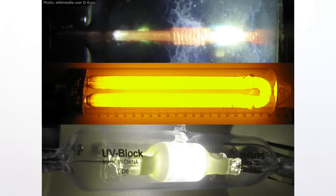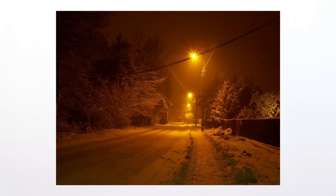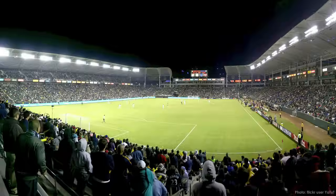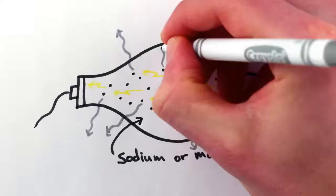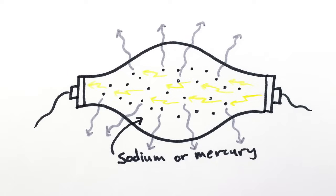Sodium, mercury, and metal halide vapor lamps, which are commonly used for lighting streets, warehouses, gymnasiums, and other large areas, are also tubes that run electrical current through a gas. The gas itself emits mainly visible light, so these bulbs don't need a fluorescent coating.